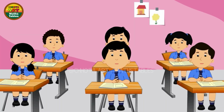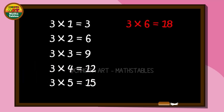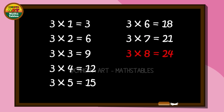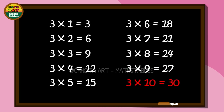3 × 6 = 18, 3 × 7 = 21, 3 × 8 = 24, 3 × 9 = 27, 3 × 10 = 30.